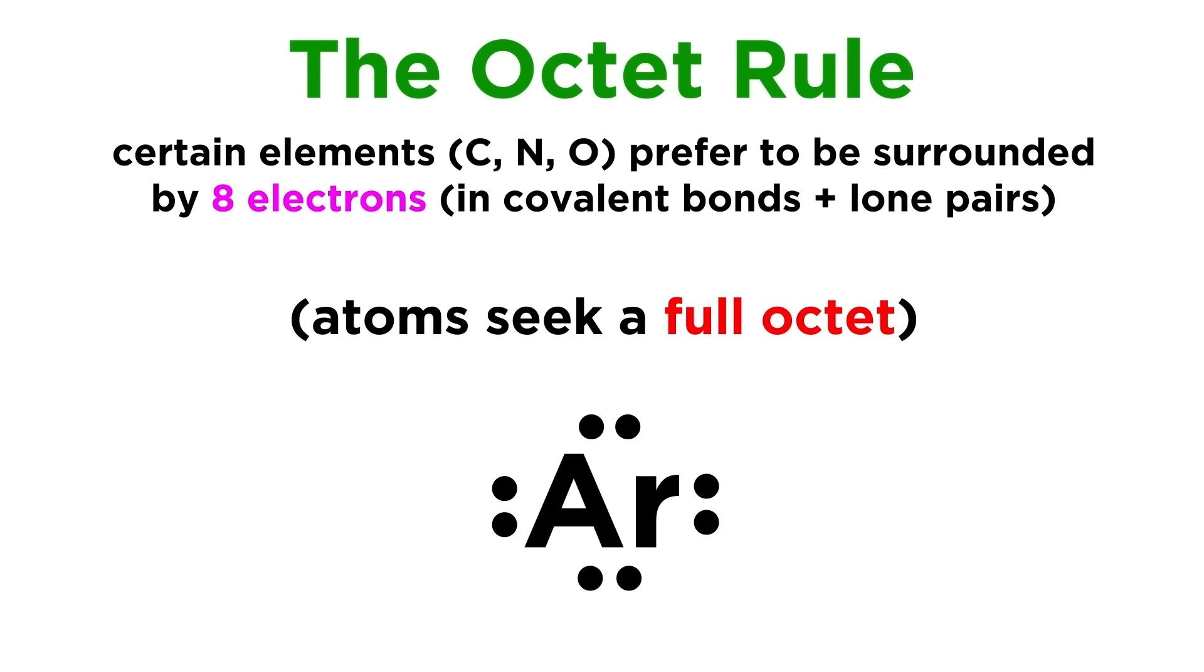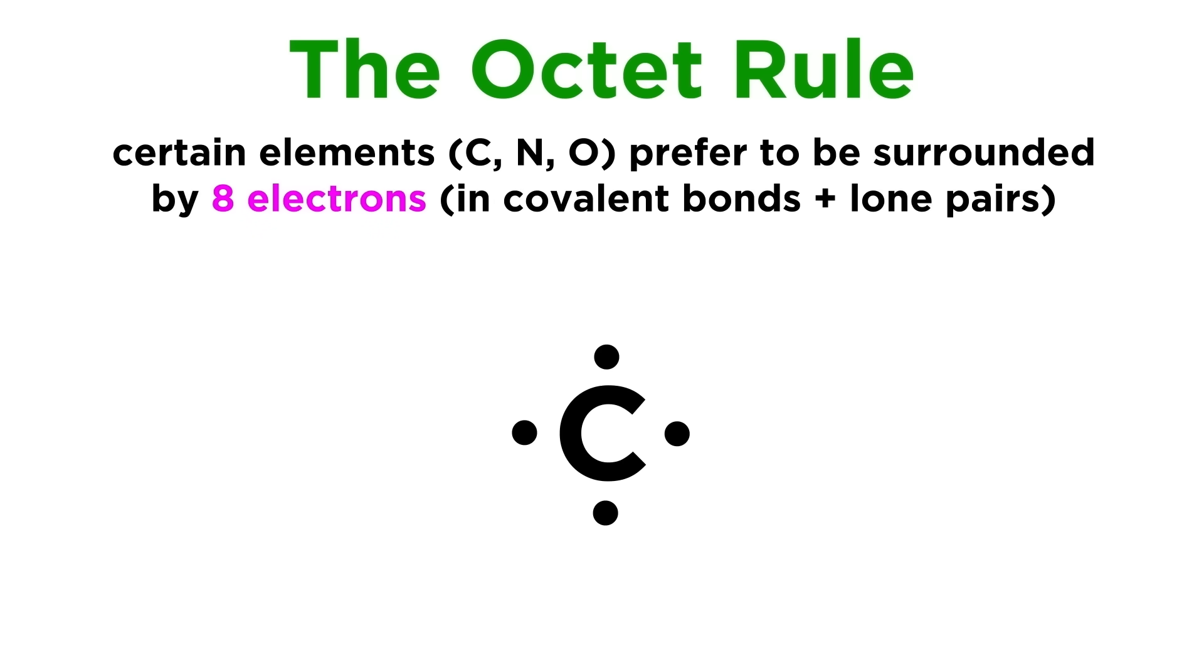This is a condition called a full octet, and it is like achieving a full valence shell, or noble gas electron configuration. For example, carbon has four valence electrons, so it will tend to make four bonds, in order to interact with four more electrons and fill its octet.